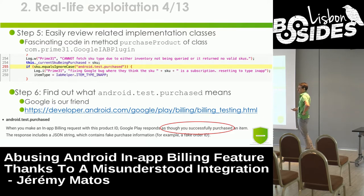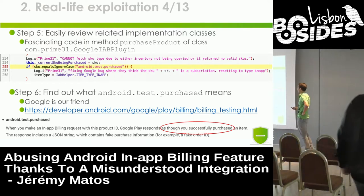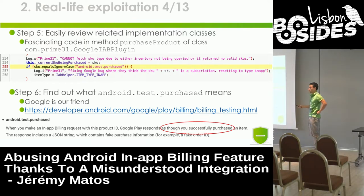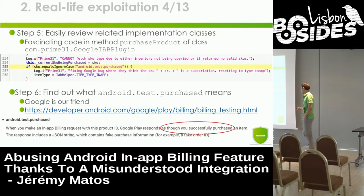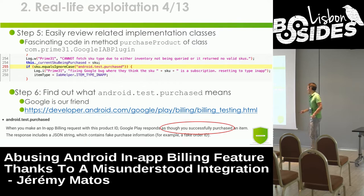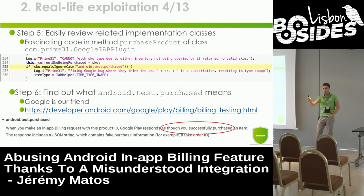What is this special case? It's looking for a special value: android.test.purchased. You just Google that value and find in the middle of those 20 pages of Google docs that android.test.purchased means Google Play will respond as though you successfully purchased something. It's a test value that says you paid for it, but in fact you don't have to pay for it.